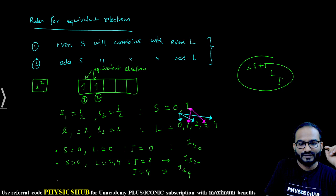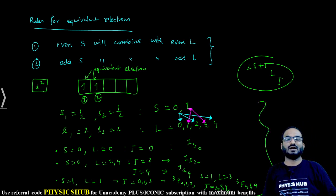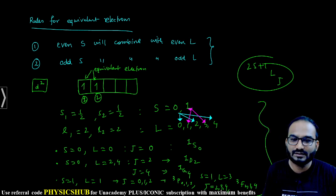On the other hand, when S=1, it will combine with L=1 and that gives you the value of J to be 0, 1, 2. So the corresponding term will be ³P₀₁₂. What about the last term? S=1 and L=3 will give rise to J=2, 3, 4 and correspondingly the terms will be ³F₂₃₄. In this way you can calculate the terms for equivalent electrons.